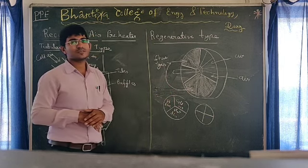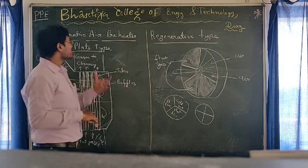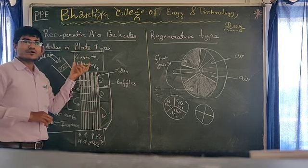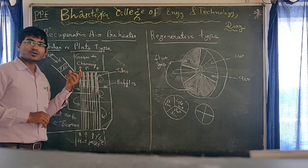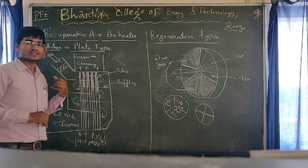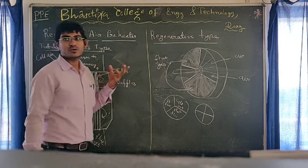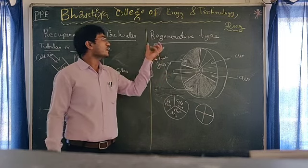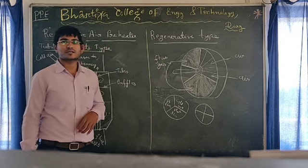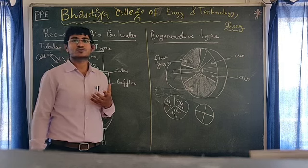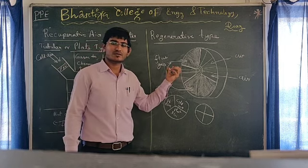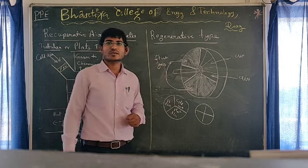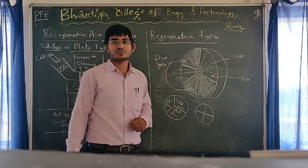Hence its name: regenerative air pre-heater. Recuperative air pre-heaters are used in boilers in power plants having low load or less load capacity. In high load capacity power plants, we use the regenerative type air pre-heater. Nowadays, in supercritical boilers, we are using this regenerative type air pre-heater. Thank you.